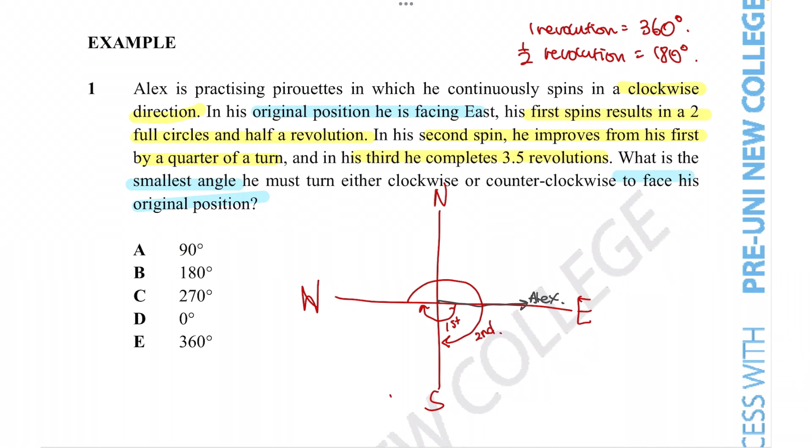Finally, his third turn completes 3.5 revolutions. Once again, it doesn't matter that he turns three times fully; what does matter is he turns a half time more than that. His last turn leads him to now face north.